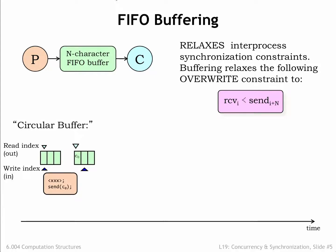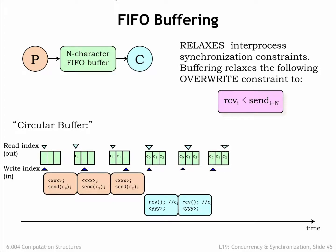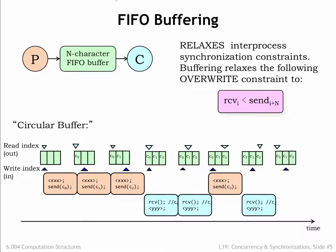Here's how it works. The producer runs using the write index to add the first character to the buffer. The producer can produce additional characters but must wait once the buffer is full. The consumer can receive a character any time the buffer is not empty, using the read index to keep track of the next character to be read. Execution of the producer and consumer can proceed in any order, so long as the producer doesn't write into a full buffer and the consumer doesn't read from an empty buffer.